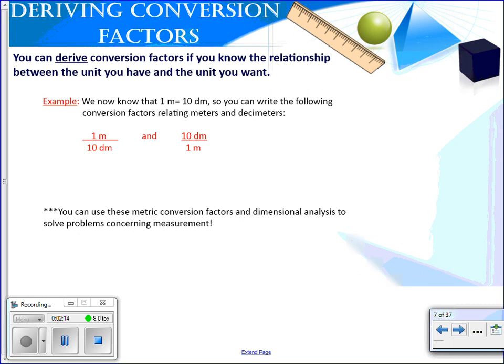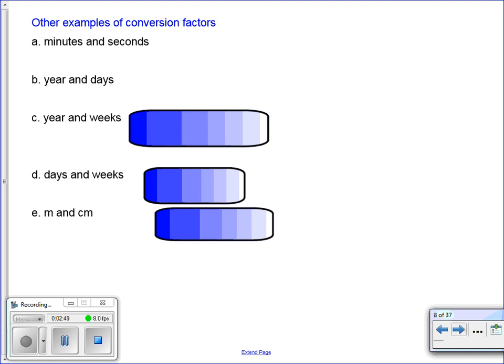You can derive conversion factors if you know the relationship between the unit and the unit that you want. So you already know from the metric equivalents that we did last unit that one meter is equivalent to 10 decimeters. You could write 10 decimeters on top and one meter on bottom. Both of these are conversion factors. They are equivalent to one. You can use metric conversion factors and dimensional analysis to solve problems concerning measurement. Now, the metric conversion factors will not be given to you in the problem. We expect you to have them memorized because you had to do that last unit. So you may want to brush up on that if you haven't.